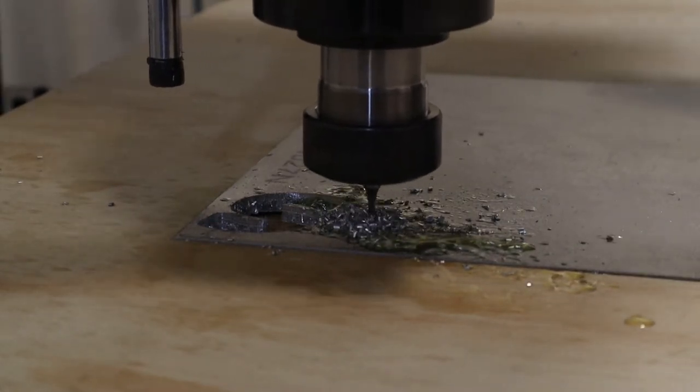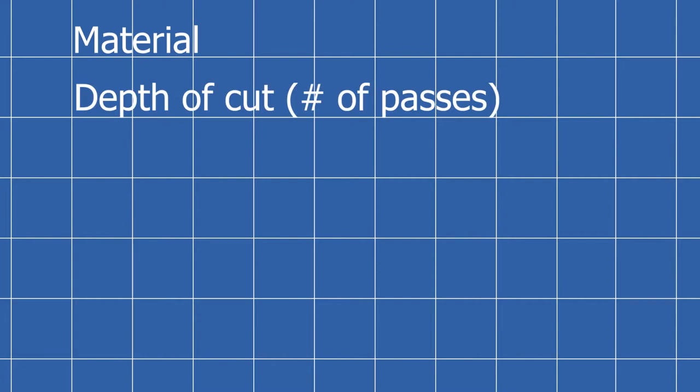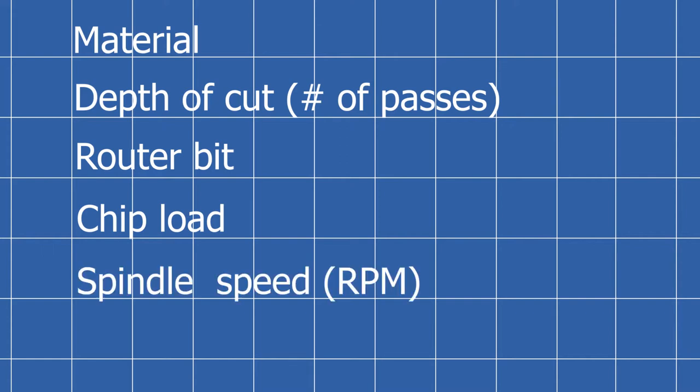There are a few factors that need to be taken into consideration to achieve good quality cuts. The main ones are material being cut, depth of cut, which is directly related to the number of passes, the size, material, and shape of the router bit, chip load, which is given by the router bit manufacturer, spindle speed in revolutions per minute, and feed rate, which is the linear speed.